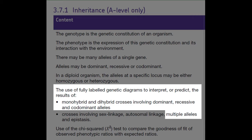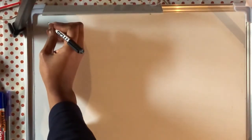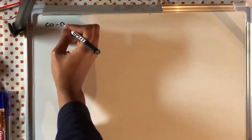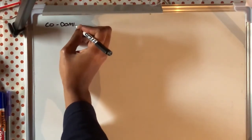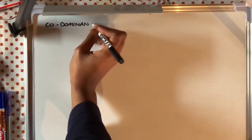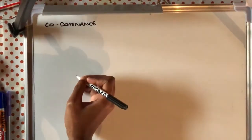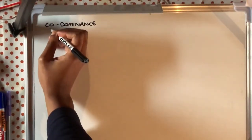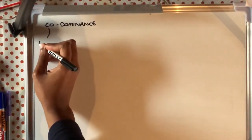Hello Year 12. This video should match up with the lesson titled co-dominance. In our previous lesson we looked at monohybrid and dihybrid inheritance and you should have had practice on drawing Punnett squares and constructing genetic crosses for both one characteristic and two characteristics.